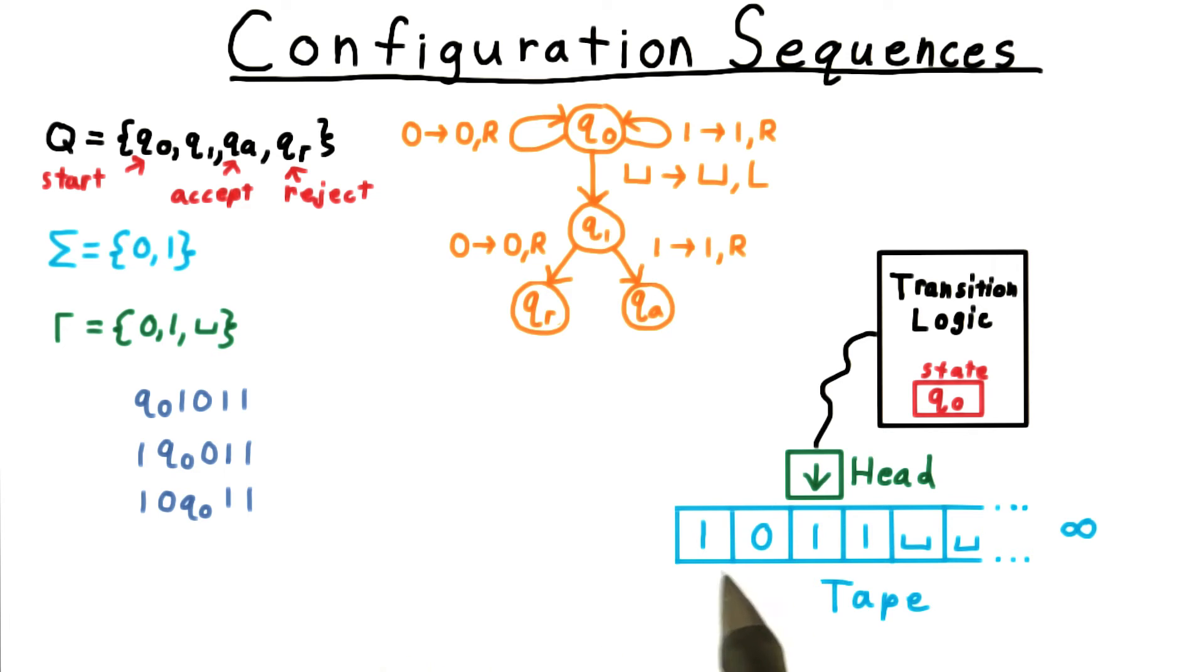In the next configuration, 1, 0 is to the left of the head. We're still in state q0, and 1, 1 is the rest of the tape contents, and so on, and so forth.